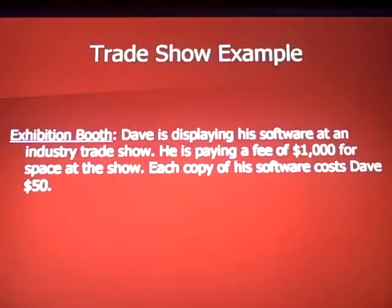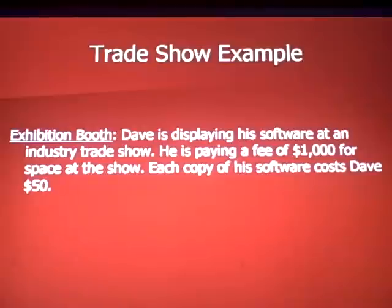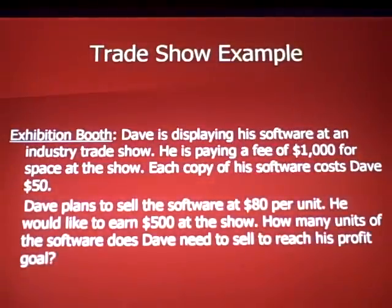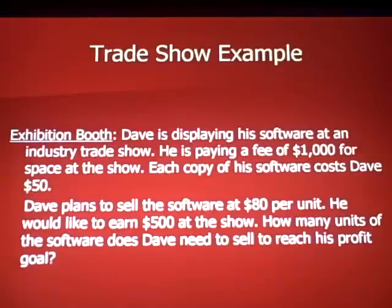Dave is paying a fee of one thousand dollars for booth space at the show, where people will walk by and he'll try to sell his software. Each copy of his software costs Dave fifty dollars, and he plans to sell it for eighty dollars a unit. He would like to earn five hundred dollars at the show, which he thinks is a reasonable goal for the time and expense he's incurring.